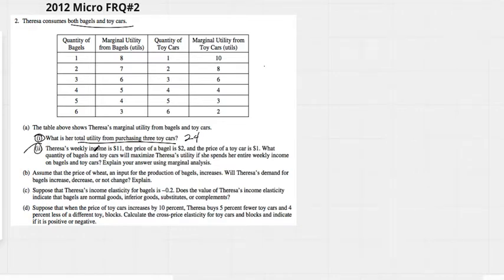Two, Teresa's weekly income is $11. The price of bagels is $2. Price of toy cars is $1. What quantity of bagels and toy cars will maximize Teresa's utility if she spends her entire weekly income on bagels and toy cars? And explain using marginal analysis.